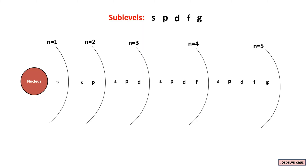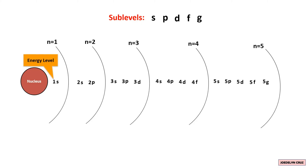Since this sublevel is in the first energy level, we write 1 before the sublevel — in this case, it's 1S. Since these sublevels are in the second energy level, we write 2 before the sublevels. The same applies to the sublevels in the third, fourth, and fifth energy levels. So, this number represents the energy level and the letter represents the sublevel.